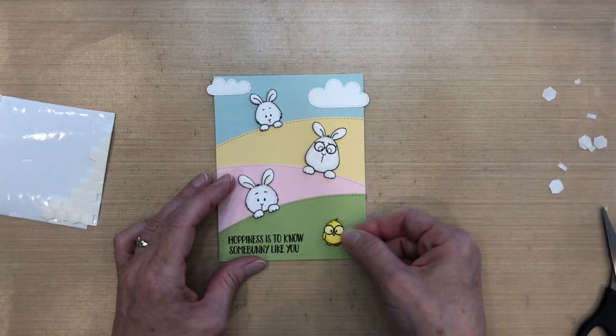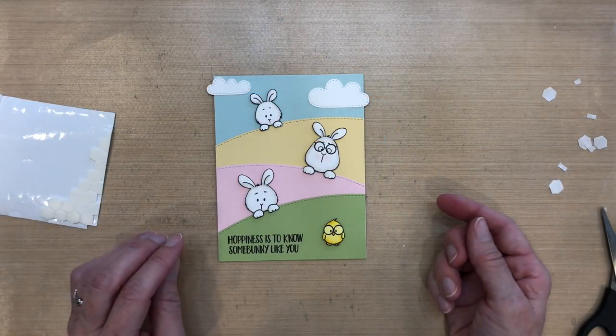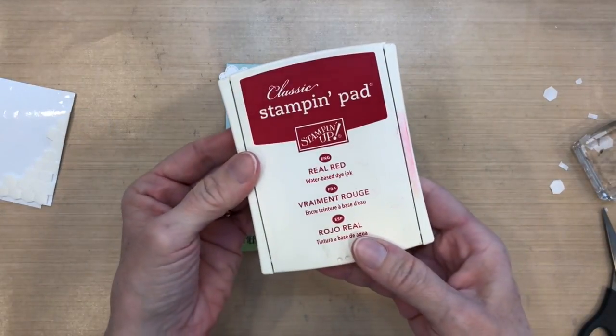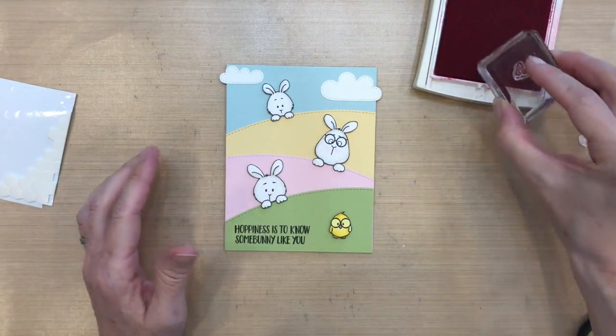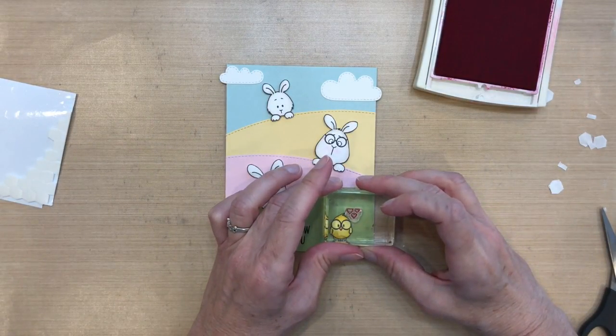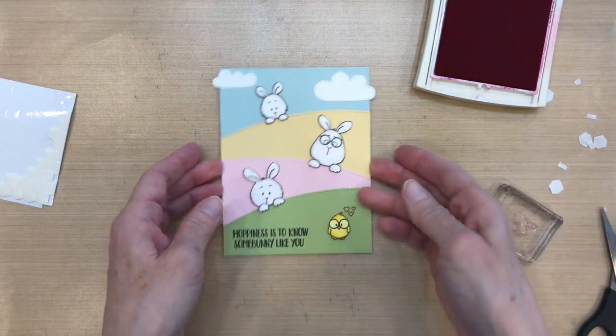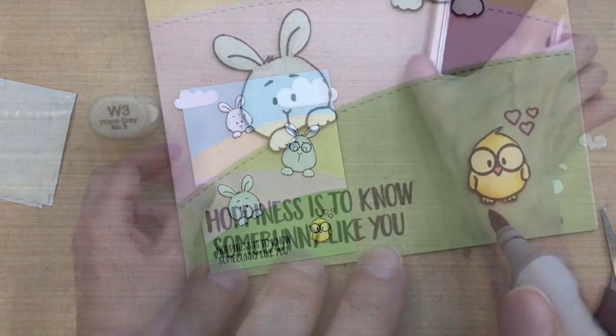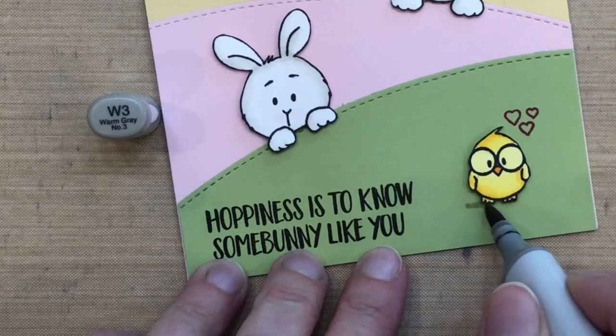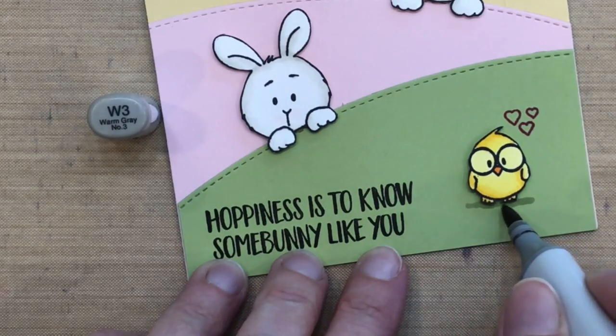This set also comes with a little cluster of hearts, so I'm going to take some Real Red ink, ink up my hearts, and put them right next to the bird. So the bird is sort of talking about the bunnies. Now I'm going to ground my birdie here with a W3.